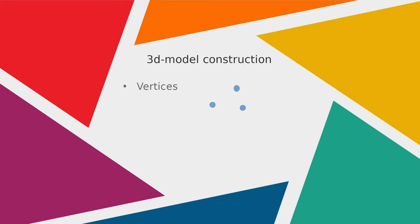All of these vertices are connected via edges. You can imagine an edge as a line between two vertices. These vertices and edges together form a face in the 3-dimensional room. These faces are called polygons. A polygon consists of a minimum of 3 edges and 3 vertices, but it can also consist of 4, 5, or even more edges and vertices.